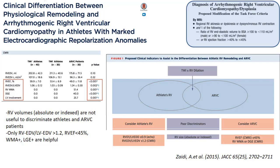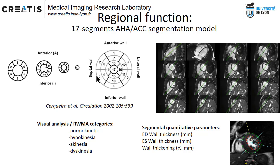This has clinical impact. For athletes with T-wave inversion where you need to consider arrhythmogenic cardiomyopathy, RV end-diastolic volume is a poor discriminator index. You should use other indices to discriminate T-wave inversion in athletes from actual ARVC patients. This is an important piece of information to have in mind.